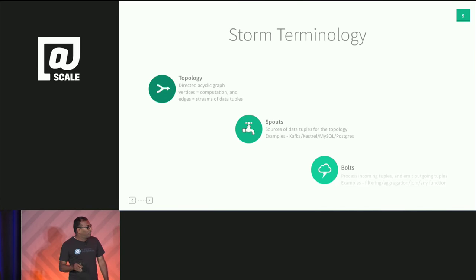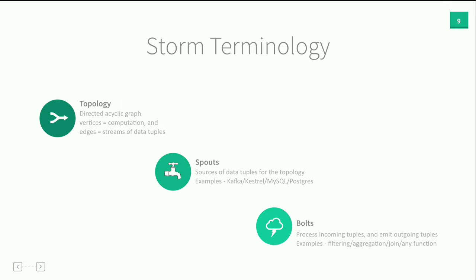Storm terminology: all real-time jobs in Storm are referred to as topologies. A topology is a DAG where the vertices represent computation and the edges represent streams of data flowing between operators. There are two types of vertices: spouts and bolts. Spouts inject data into the real-time job — examples include Kafka, Kestrel, or OLTP databases like MySQL and Postgres. Bolts are where the actual action happens: they take incoming data, do some transformation or computation, and push data out. Examples include filtering, aggregation, joins, or arbitrary machine learning functions.